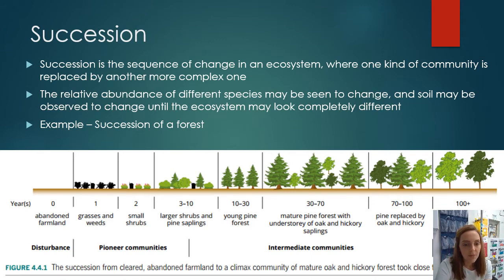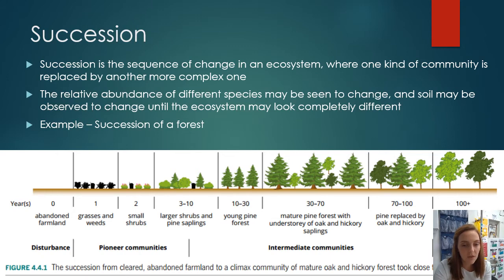We can see from the diagram at the bottom there are years shown, with a disturbance happening at the zero year mark. We can see abandoned farmland there on the left, and the next column shows the pioneer communities.